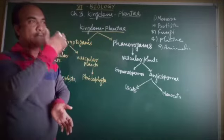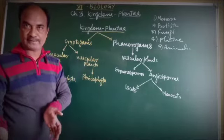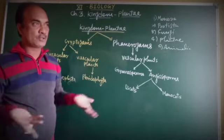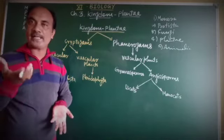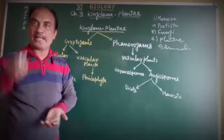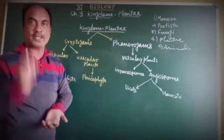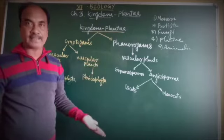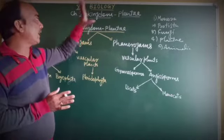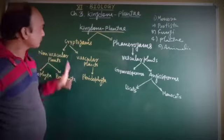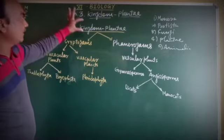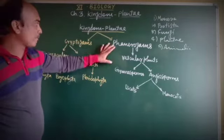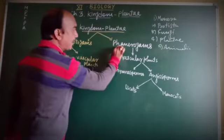According to similarity and difference — just like when you go to any medical store, there is a systematic arrangement of medicines according to the alphabet, with similar and dissimilar characters. That is called classification. Similarly, Kingdom Plantae is classified into two main groups: Cryptogams and Phanerogams.